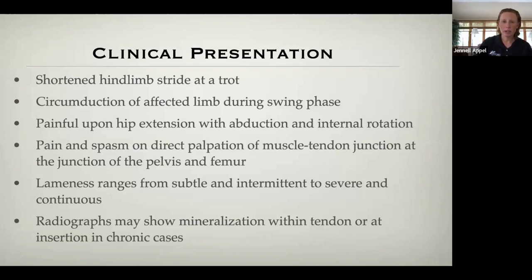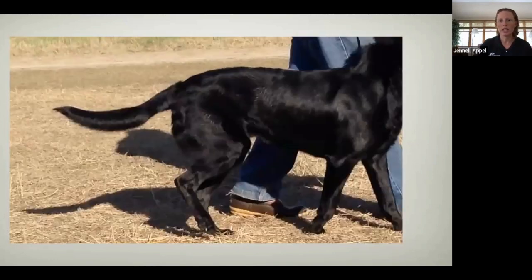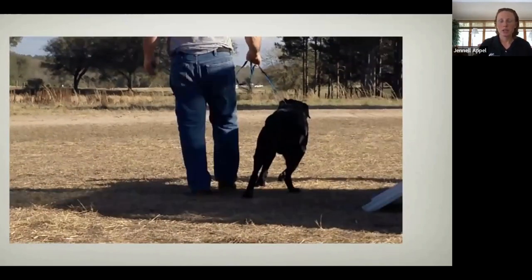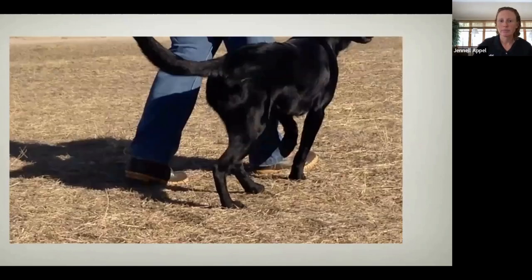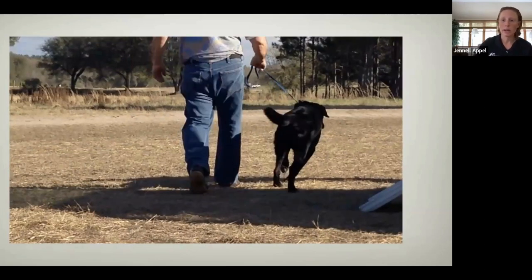This is an example of an iliopsoas strain that looks very similar to a cruciate injury — watch for a shortened stride and a very subtle circumduction of the leg. Most of the time this is going to be a weight-bearing lameness.